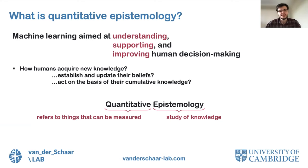The main purpose of quantitative epistemology is to develop machine learning methods aimed at understanding, supporting, and improving human decision making. We achieve this by building decision making models capable of capturing how humans acquire new knowledge, establish and update their beliefs, and act on the basis of their cumulative knowledge. Since our approach is driven by observational data and attempts to answer questions concerning knowledge, we call this new research pillar quantitative epistemology.